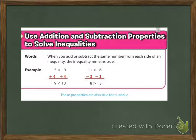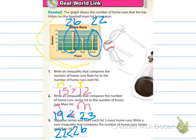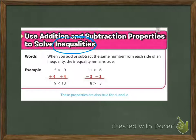Use addition and subtraction properties to solve inequalities. When you add or subtract the same number from each side of an inequality, the inequality remains true. This is just like our one-step equations — the only difference is we have inequality signs instead of equal signs. We're going to do the opposite operation. As long as we do something to one side and do it to the other, the statement remains true.